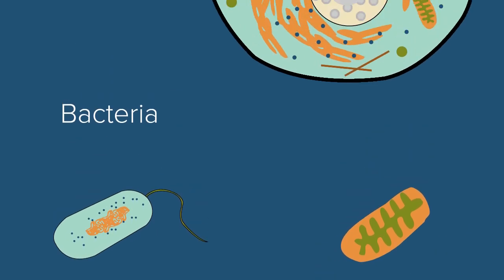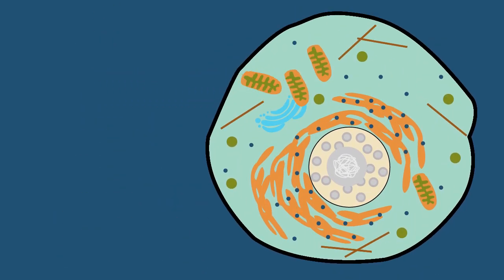Eventually, mitochondria were incorporated into the cell of another organism, and from then on, mitochondria have lived on inside their host cells, manufacturing energy for other organisms.